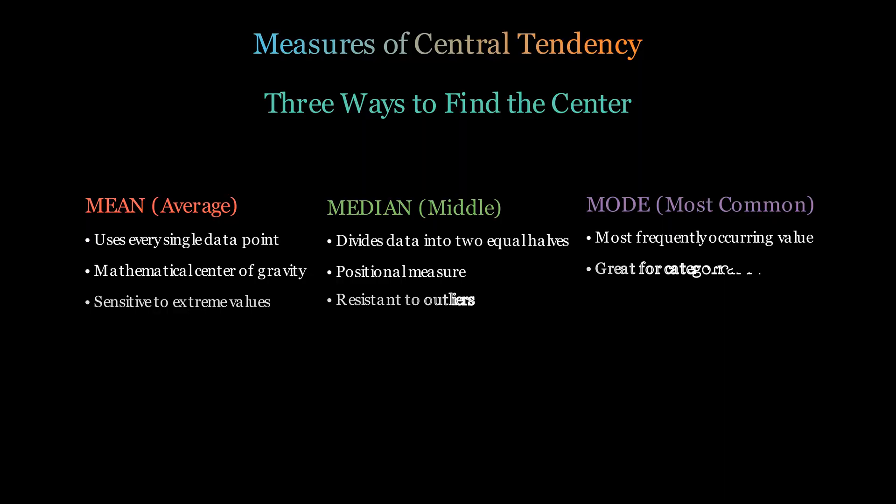The mode is the people's choice—it tells us what value appears most often, making it perfect for understanding popularity, preferences, or the most common occurrence in your data.